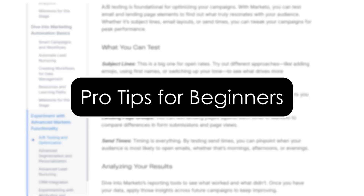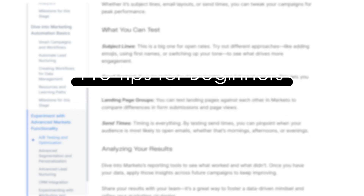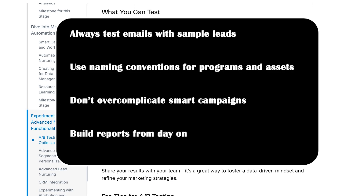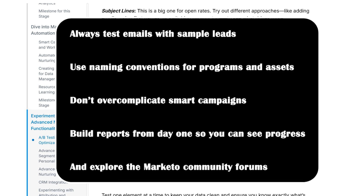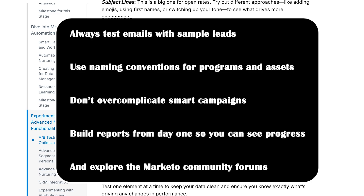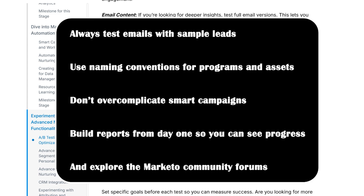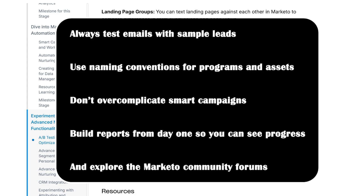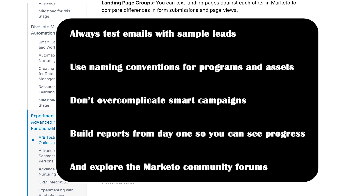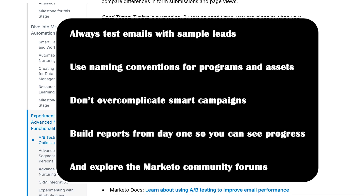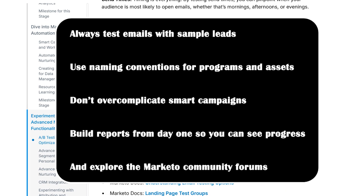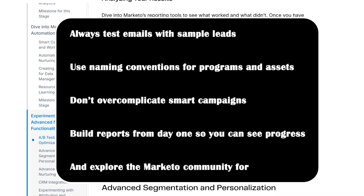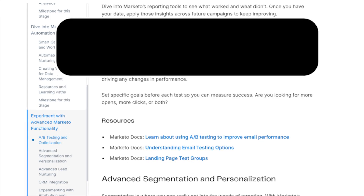Pro tips for beginners. Before we wrap up, here are a few beginner tips: always test emails with sample leads; use naming conventions for programs and assets; don't overcomplicate smart campaigns — keep flows simple; build reports from day one so you can see progress; and explore the Marketo Community Forums. They're gold, actually.